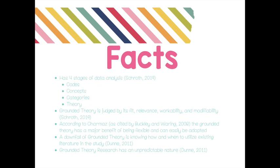Grounded theory has the major benefit of being flexible and can be adapted for numerous different purposes and types of research. The downfall is that it's hard to know when and how to utilize the existing literature within the study. It's always important to identify existing literature on your topic, but with grounded theory, knowing when and how to use that literature is very difficult. Additionally, grounded theory has an unpredictable nature, which can make it more challenging to use.